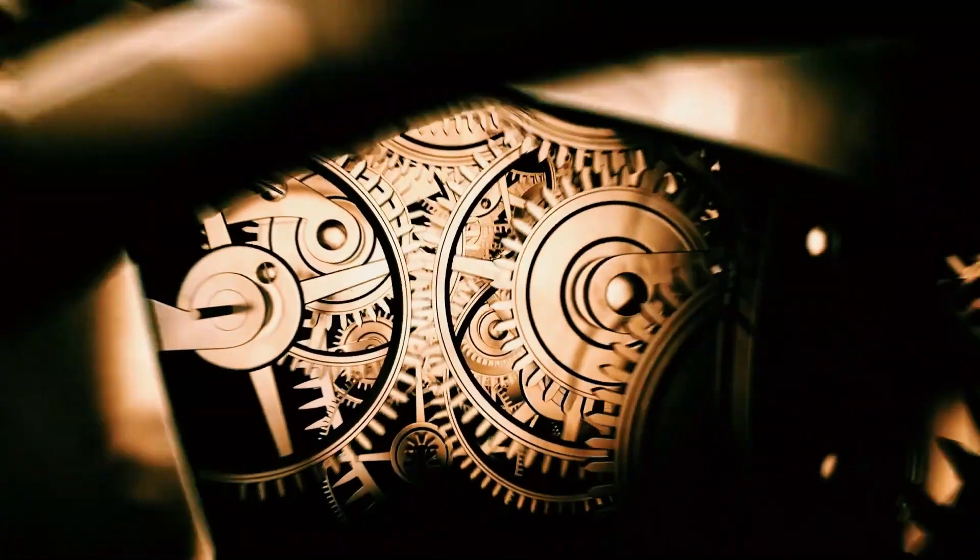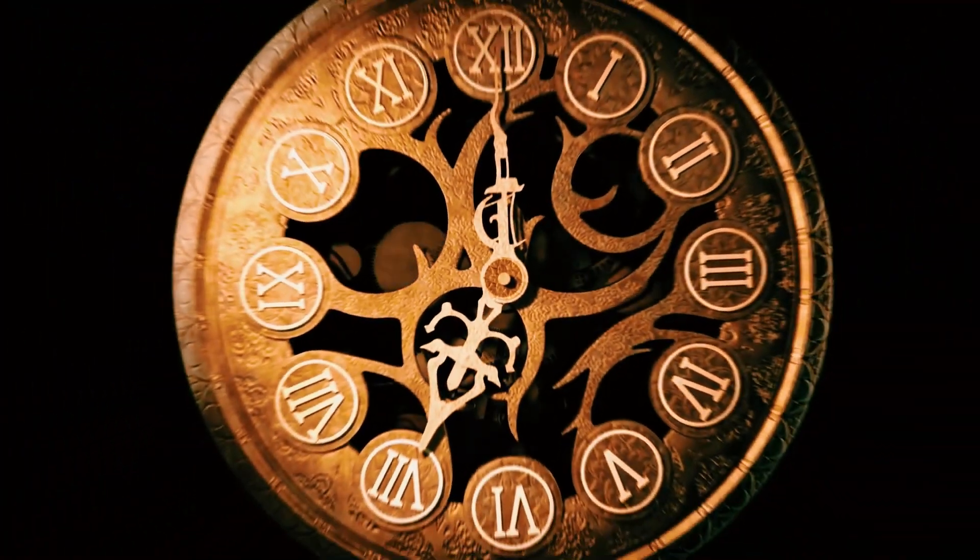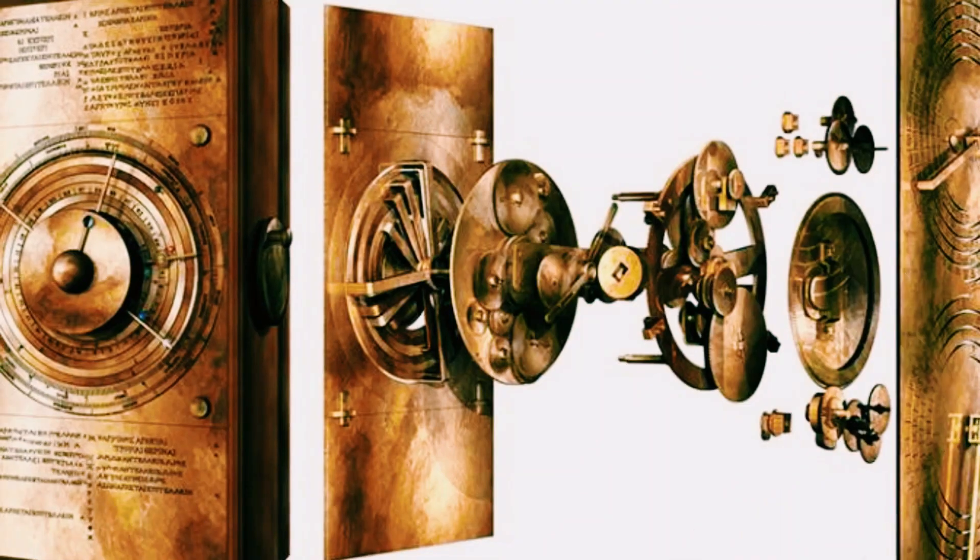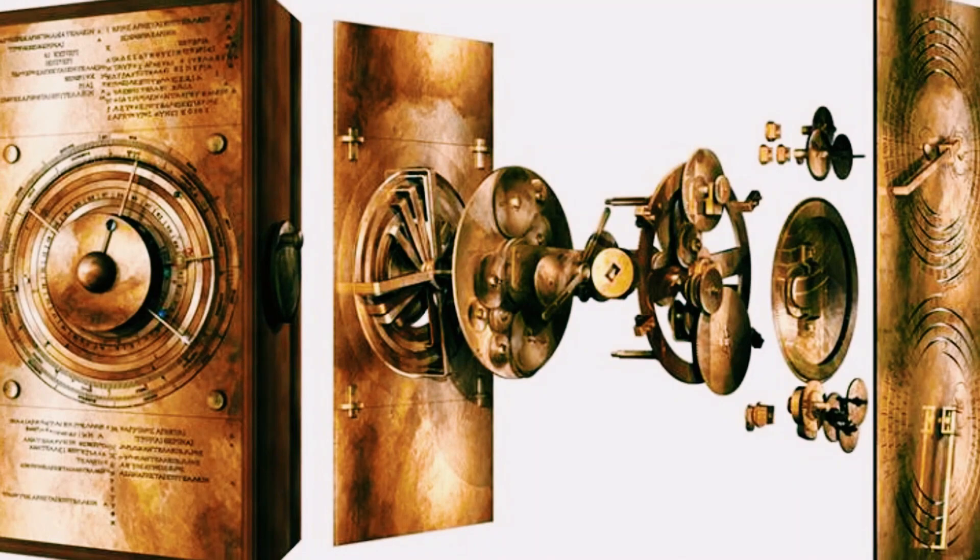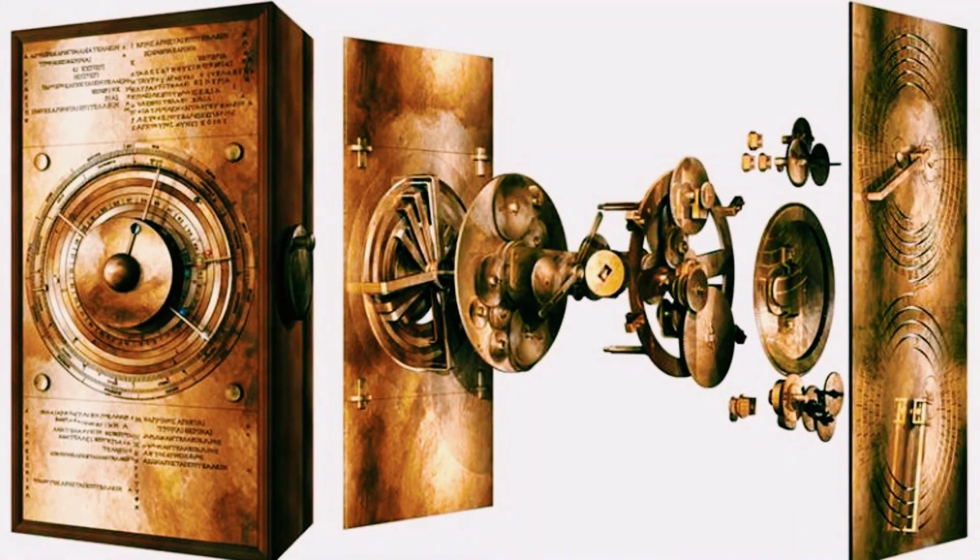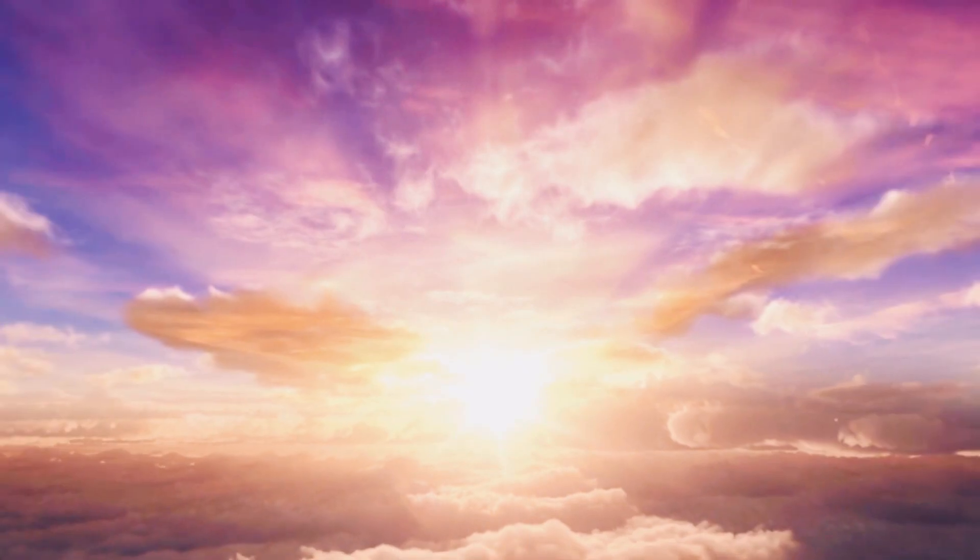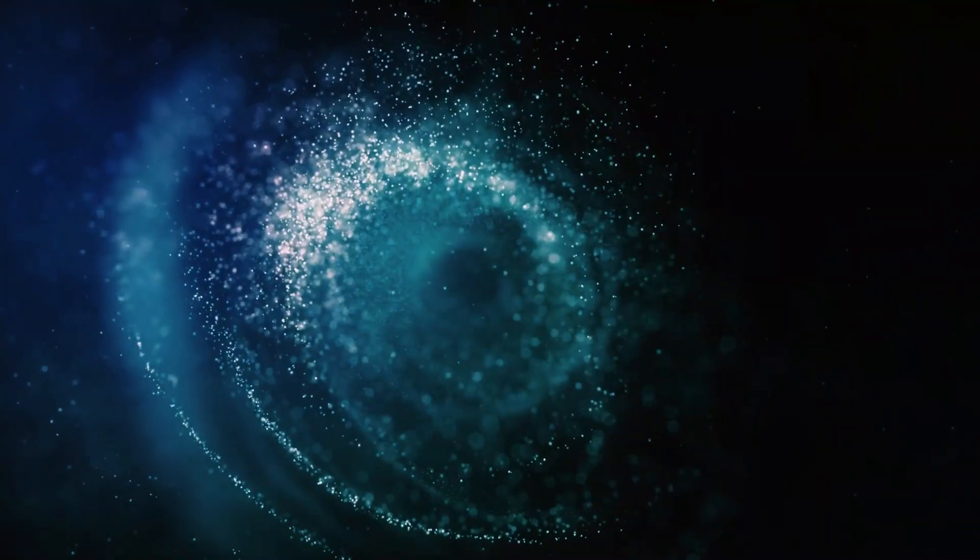Now, let's take a closer look at what this marvel of ancient engineering actually is. The Antikythera mechanism is a bronze device that was originally housed in a wooden case, and it is believed to have been used to track the positions of the sun, moon, and planets in the sky.